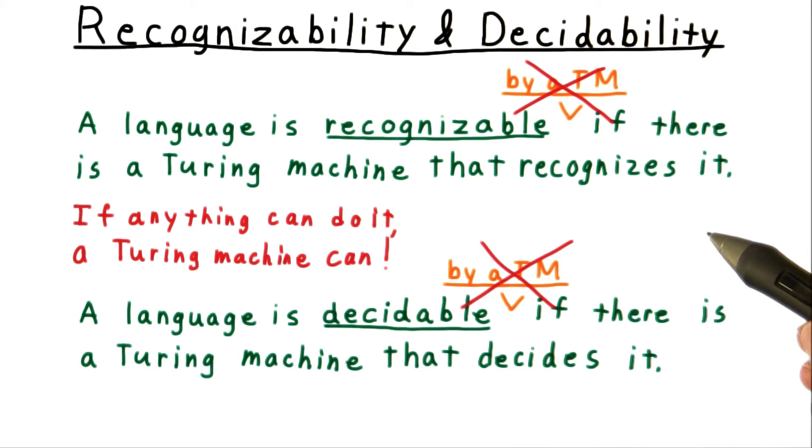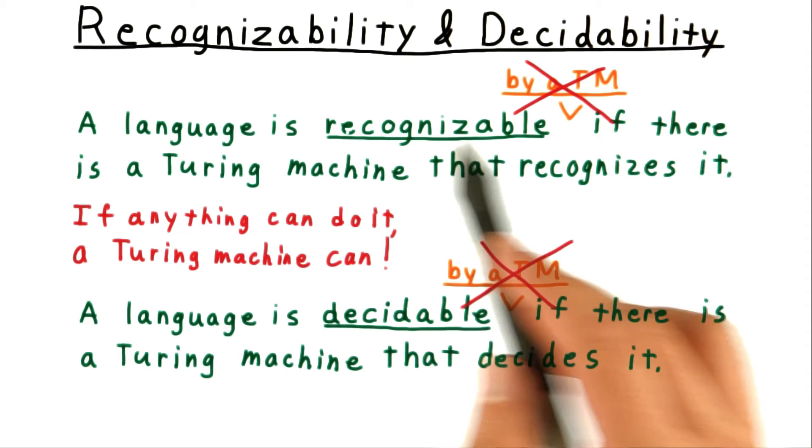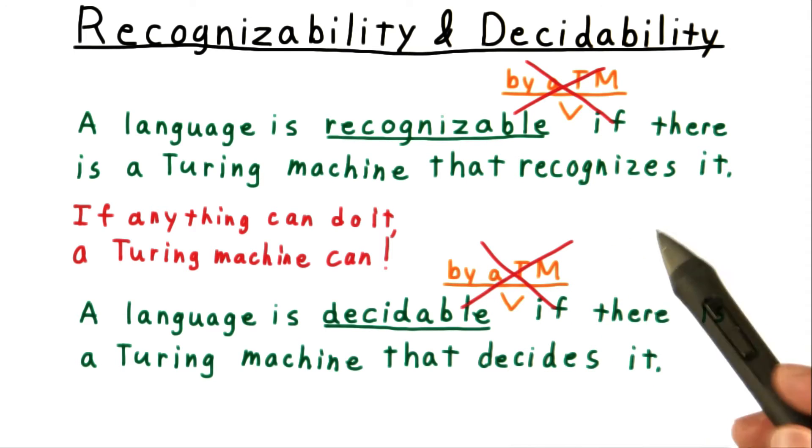So in some absolute sense, we believe that a language is only recognizable by anything if a Turing machine can recognize it. And a language is only decidable by anything if a Turing machine can decide it. And we use terms that reflect this belief.